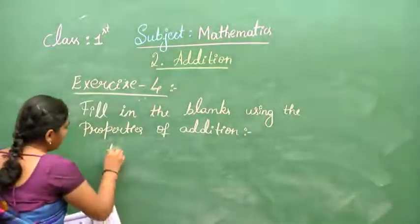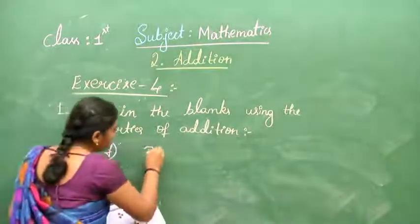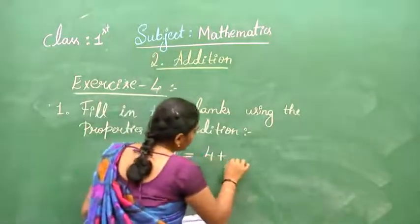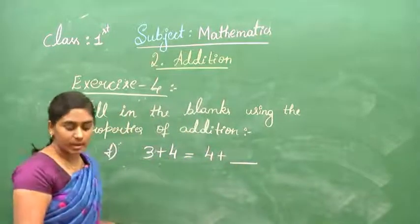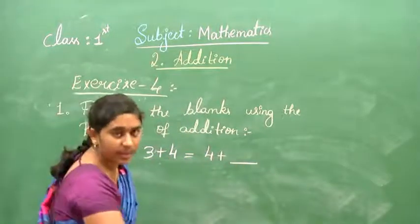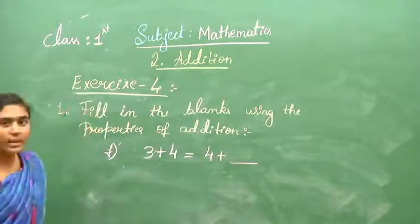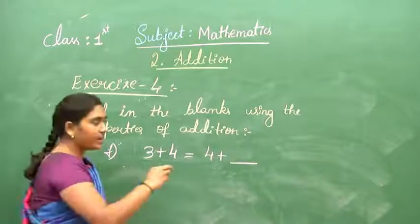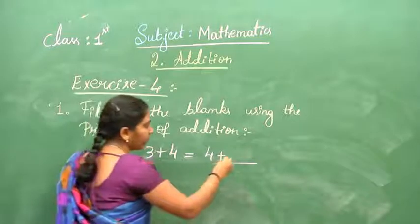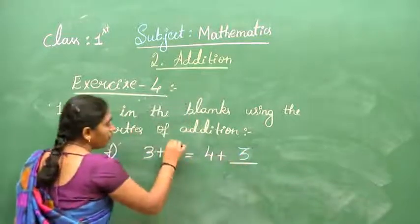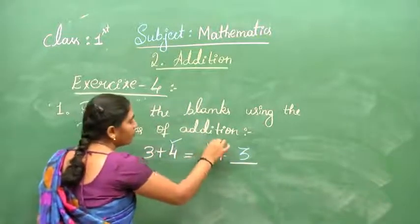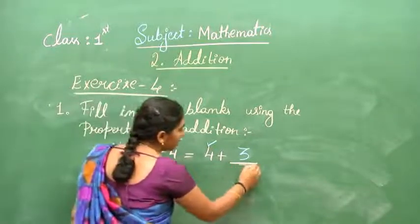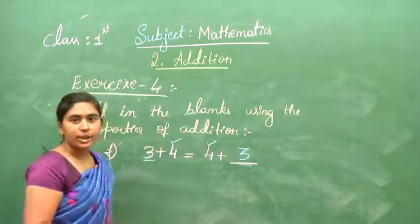Next: 3 plus 4 equals 4 plus blank. It is similar to the previous one. What will come in the blank? Both sides have 4, so the number 3 must go in the blank. 3 and 3 are on both sides.